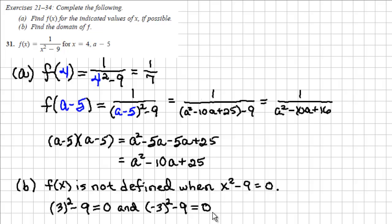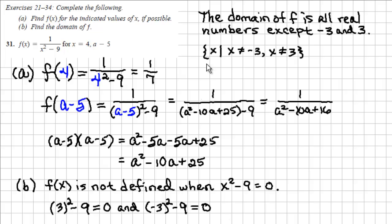Therefore, the domain of f is all real numbers except for negative 3 and 3. We can write the domain of f in set builder notation as the set of x such that x does not equal negative 3 and x does not equal 3.